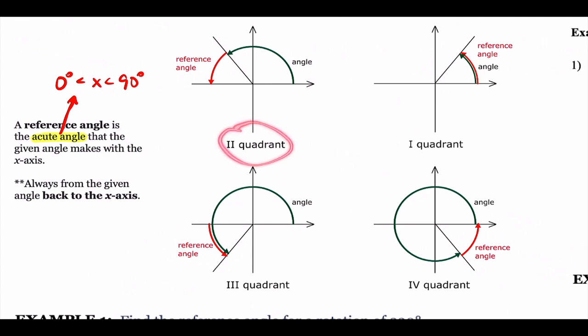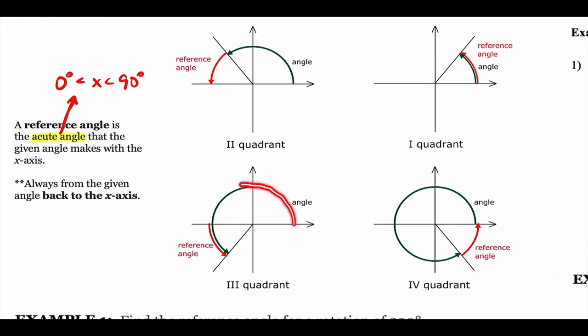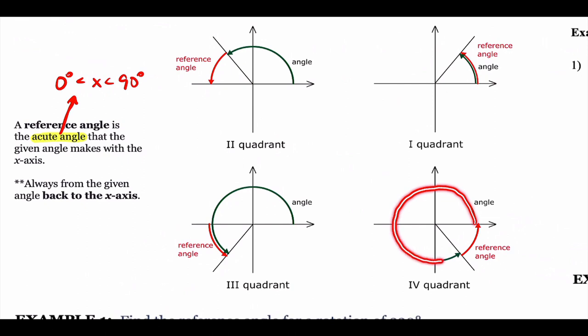If you're in quadrant two, the reference angle is how much more you need to get to 180 — wherever you're at, how much farther to get to 180. Quadrant three: you've passed 180, so how much to double back and get back to 180? Quadrant four: you've passed 90, 180, and 270 — how much more opening do you need to get all the way to 360? It just depends on where you're located.